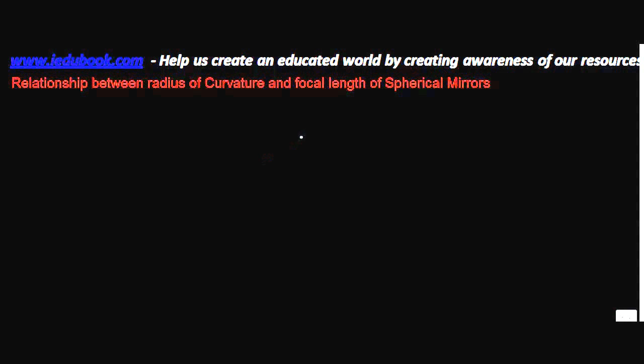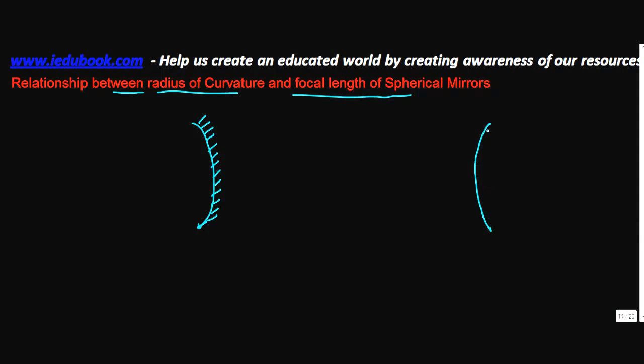Now again, we need to understand what is the relationship between radius of curvature and focal length of a spherical mirror. So the spherical mirror can be a concave mirror or a convex mirror. Let's call this as M M dash.